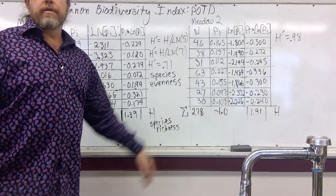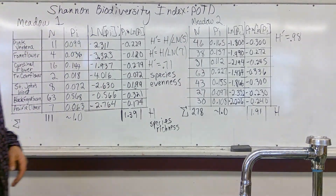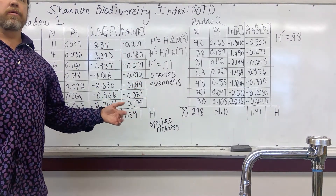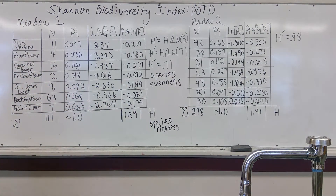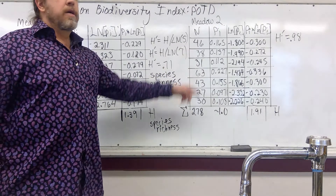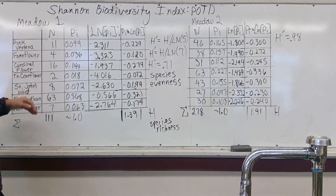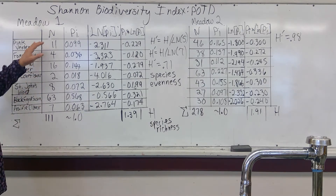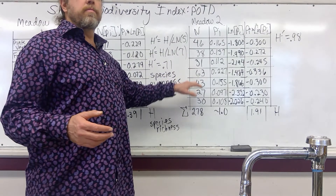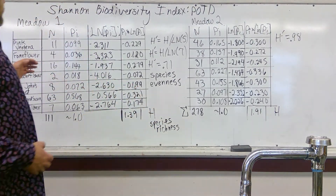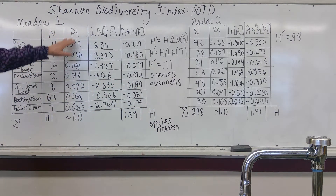In Meadow 2, we've done the same assessment, counting how many of each species are in a particular randomly selected plot area. What we want to do is get a composite value that takes into account both how many species are there, how many of each species are there, and how healthy the representation is in terms of evenness.